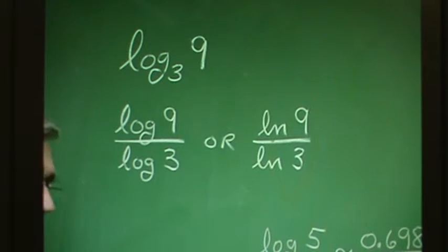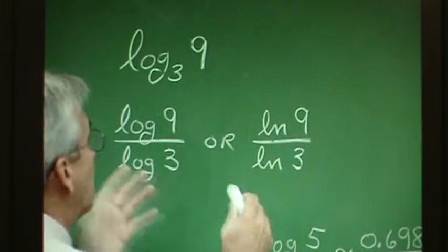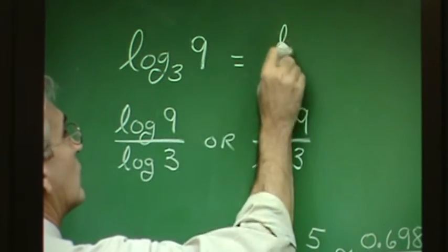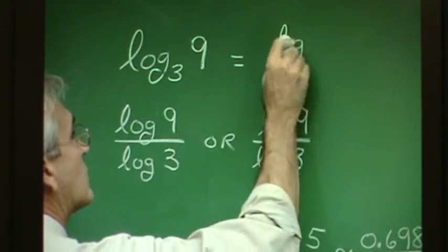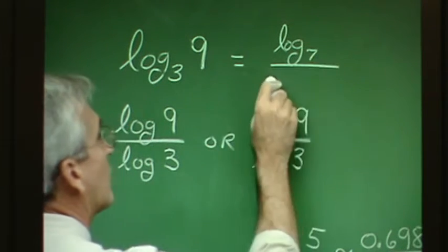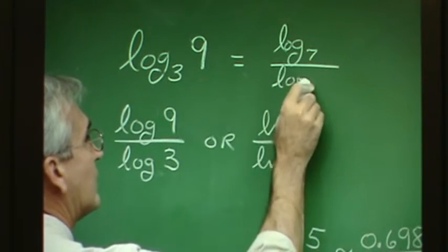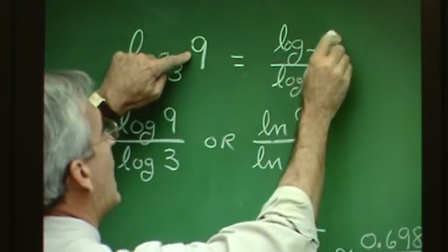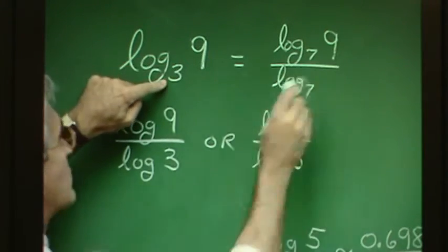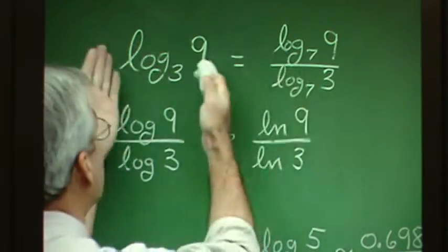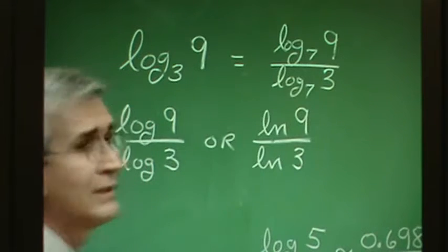If we wanted to change to a base of 7, we could change this expression to base 7 like this: log base 7 of 9 goes in the numerator, and log base 7 of 3 goes in the denominator. So we have changed the base of this expression to 7.